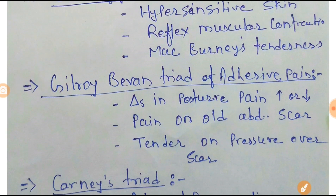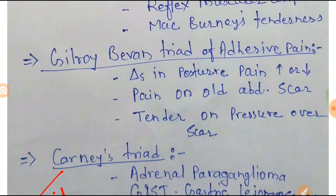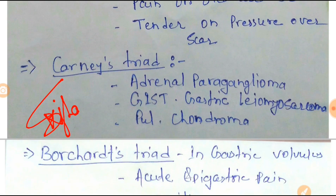Next one is the Delroy-Waugh Triad of adhesive pain. The triad is: change in posture — if you change posture the pain may increase or decrease; pain on an old abdominal scar; and tenderness on pressure over the scar, meaning when you press over the old scar the patient feels pain.